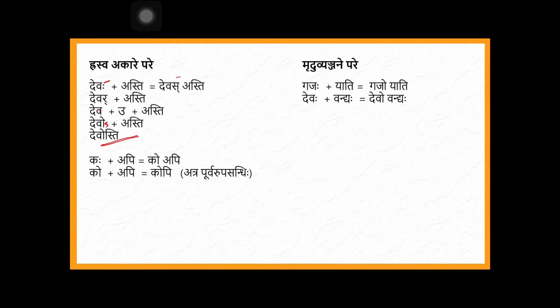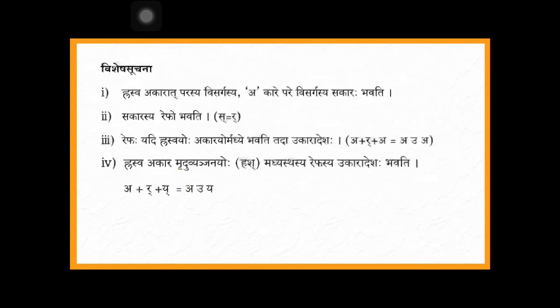One more example: kaha api — it becomes 'ko api'. How? kaha → ka u api → ko api. After 'ko api', ko + api becomes 'kopi' by purvarupa sandhi. If it is mrudu vyanjana: gajaha yati → gajo yati. And deva avandhya → devo avandhya.